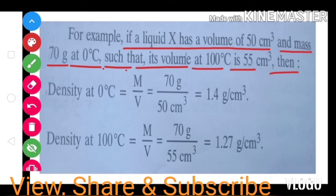Density at 0°C is equal to mass per unit volume. So M/V = 70 grams / 50 cm³ = 1.4 grams per cm³.